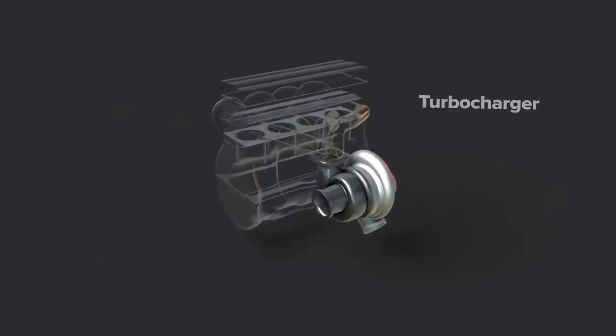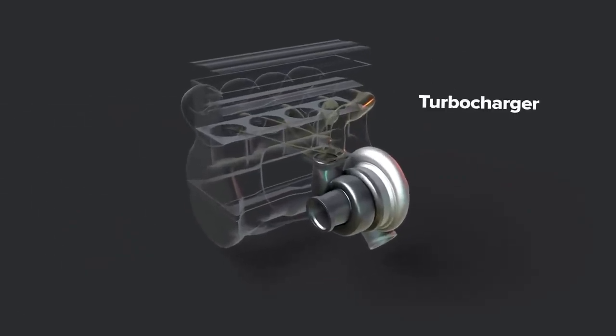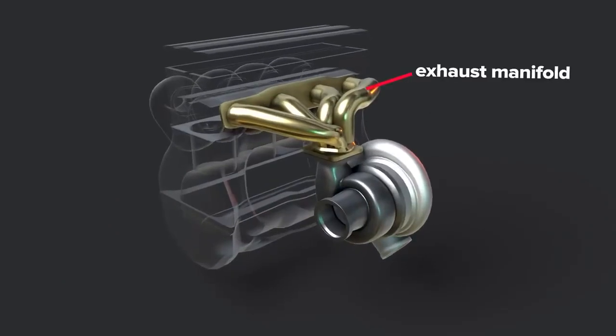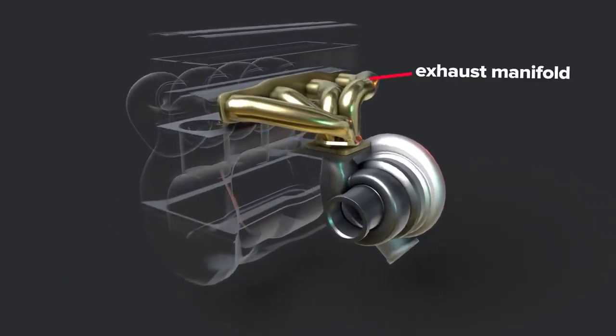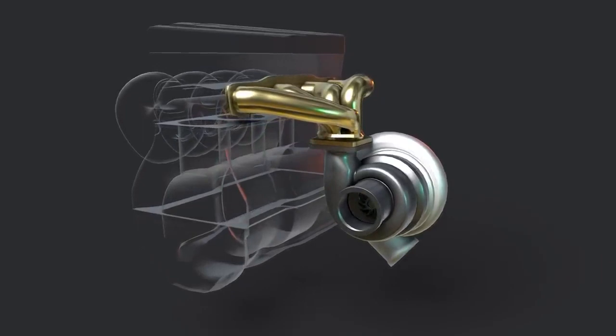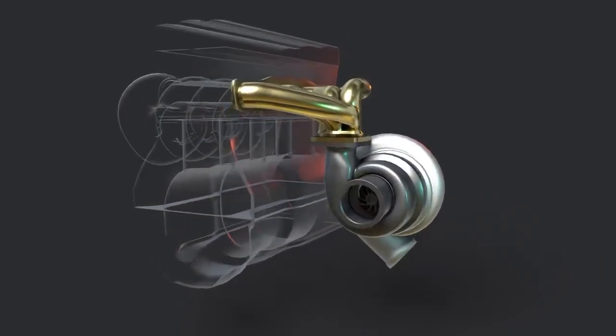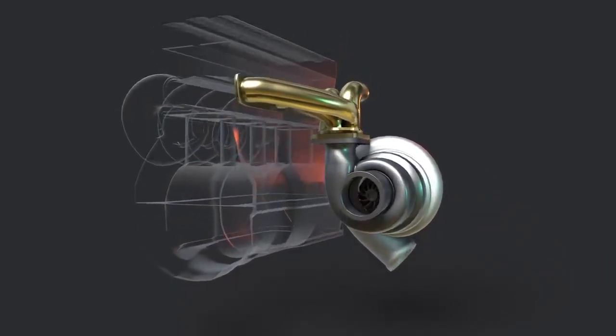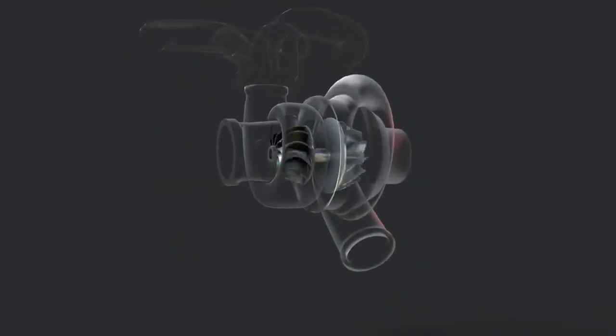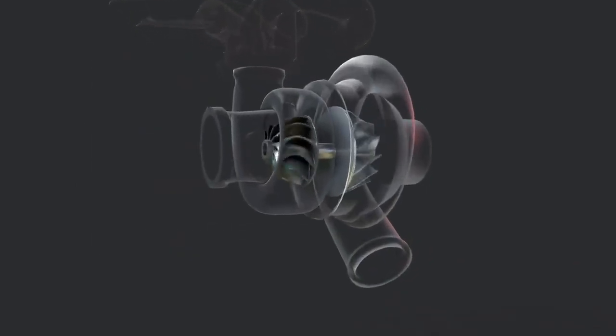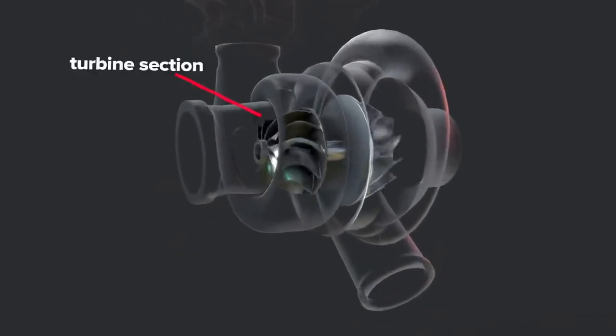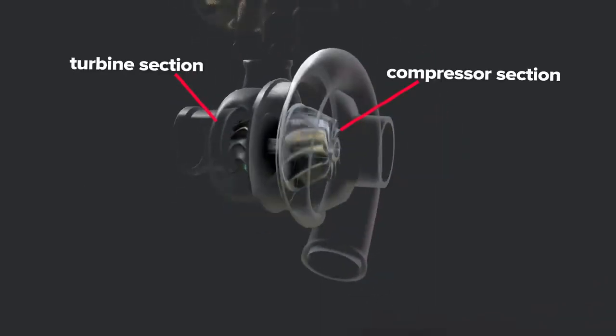Now let's look at how turbochargers work. The turbo connects to the engine exhaust system. In turbo setups the exhaust manifold may be specially designed for turbo placement and to handle increased heat and pressure. The turbo has two separate compartments called the turbine section and the compressor section.